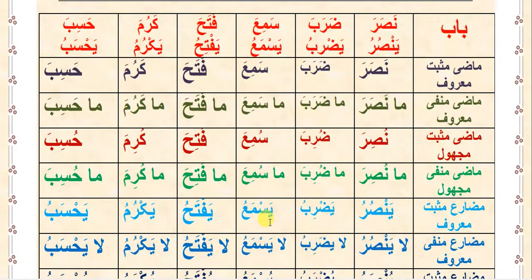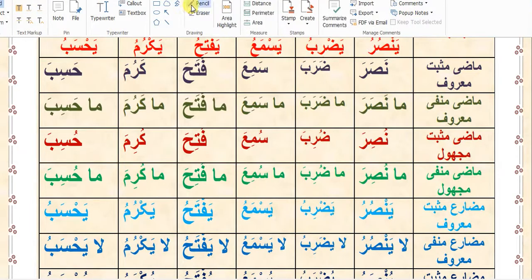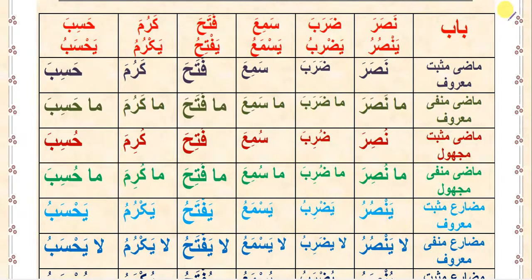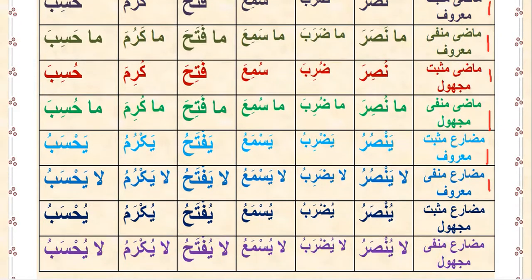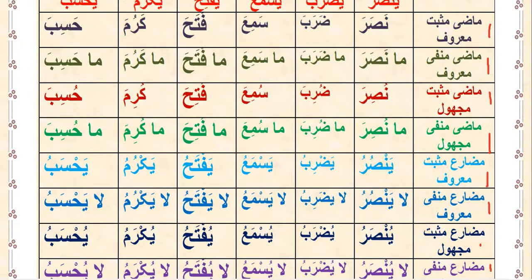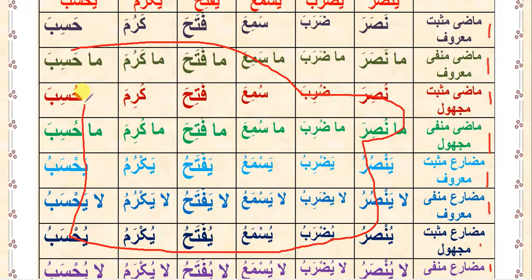I have given you a table which is showing in the upper section the list of babs we have learned. And here I have given the name of each and every fi'l which we have already learned in ilm-us-sarf, and for the rest there is one example from each bab and each fi'l.